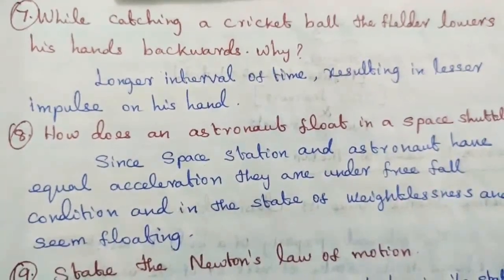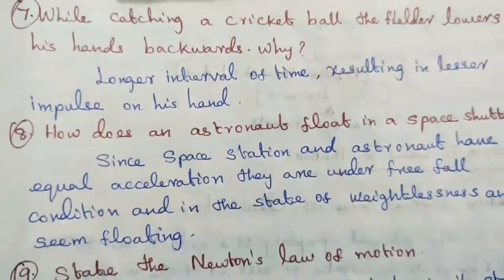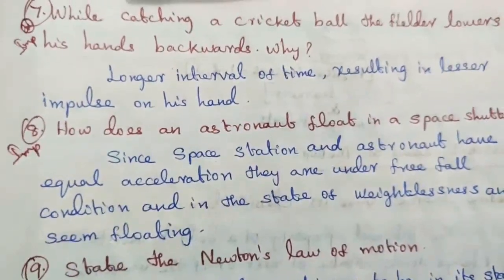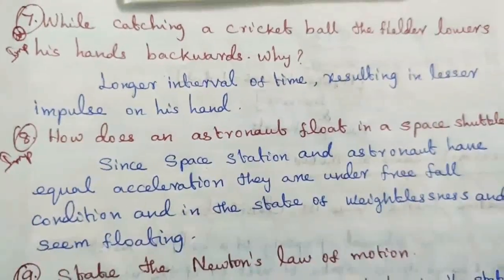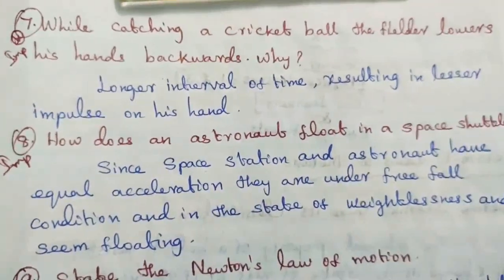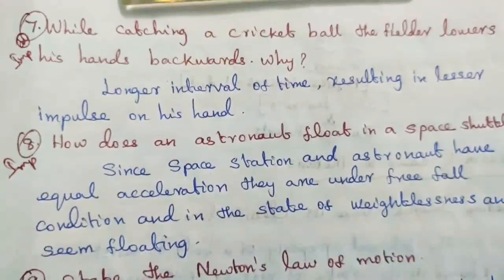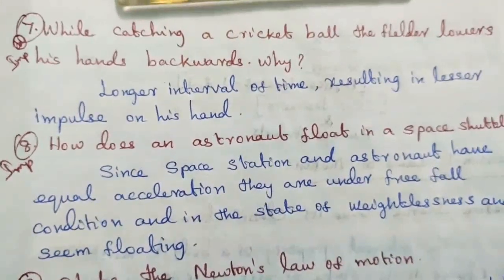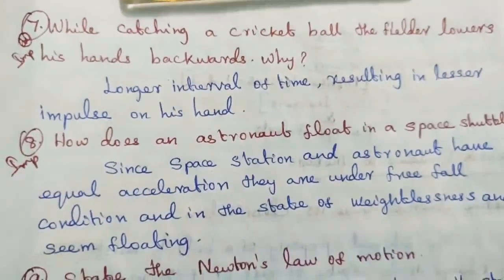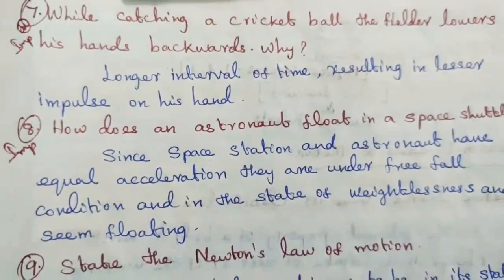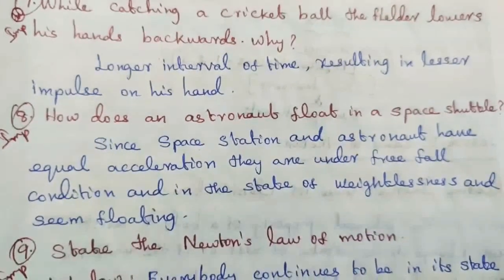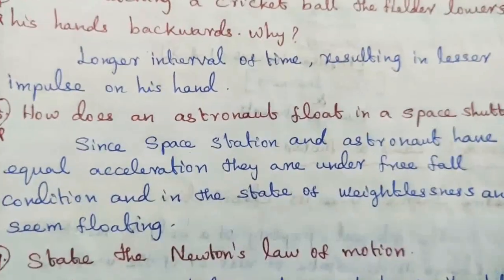Question number seven: while catching a cricket ball, why does the fielder lower his hands backwards? A longer interval of time results in lesser impulse on his hand.